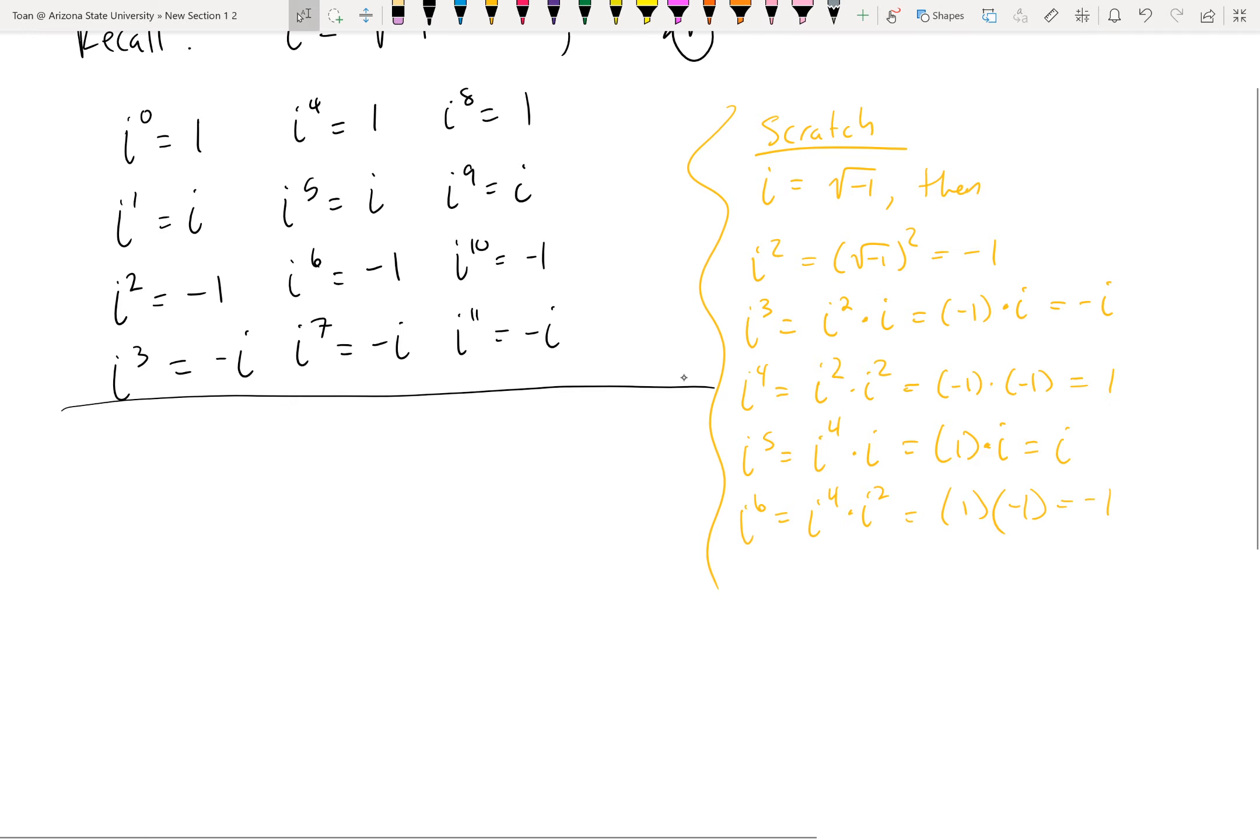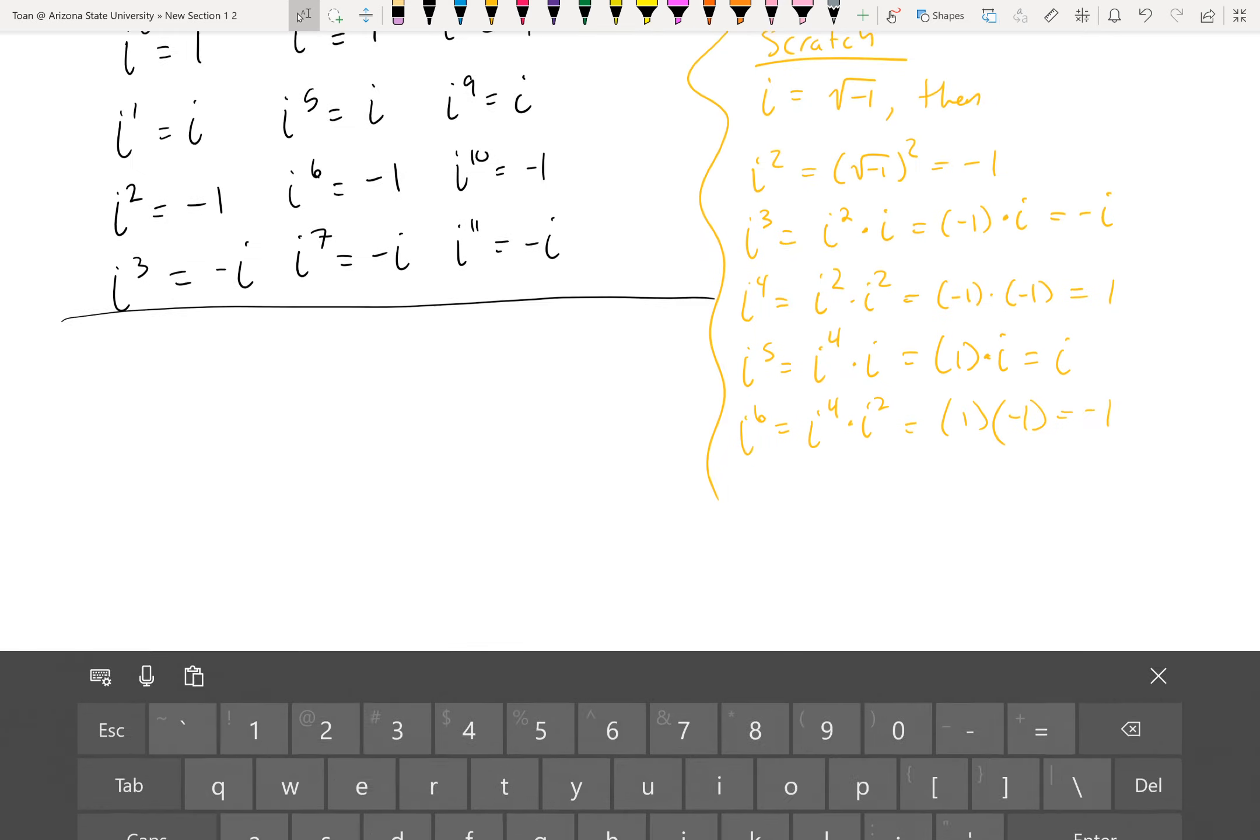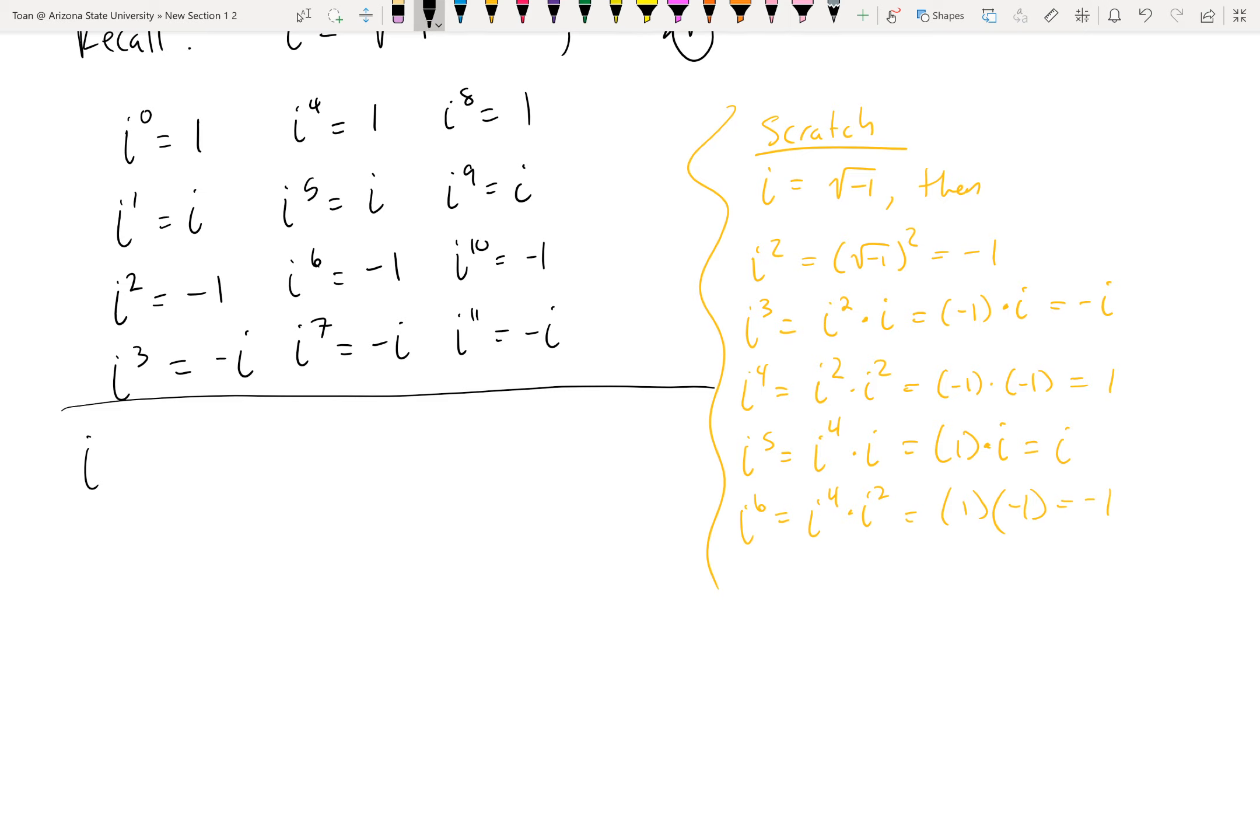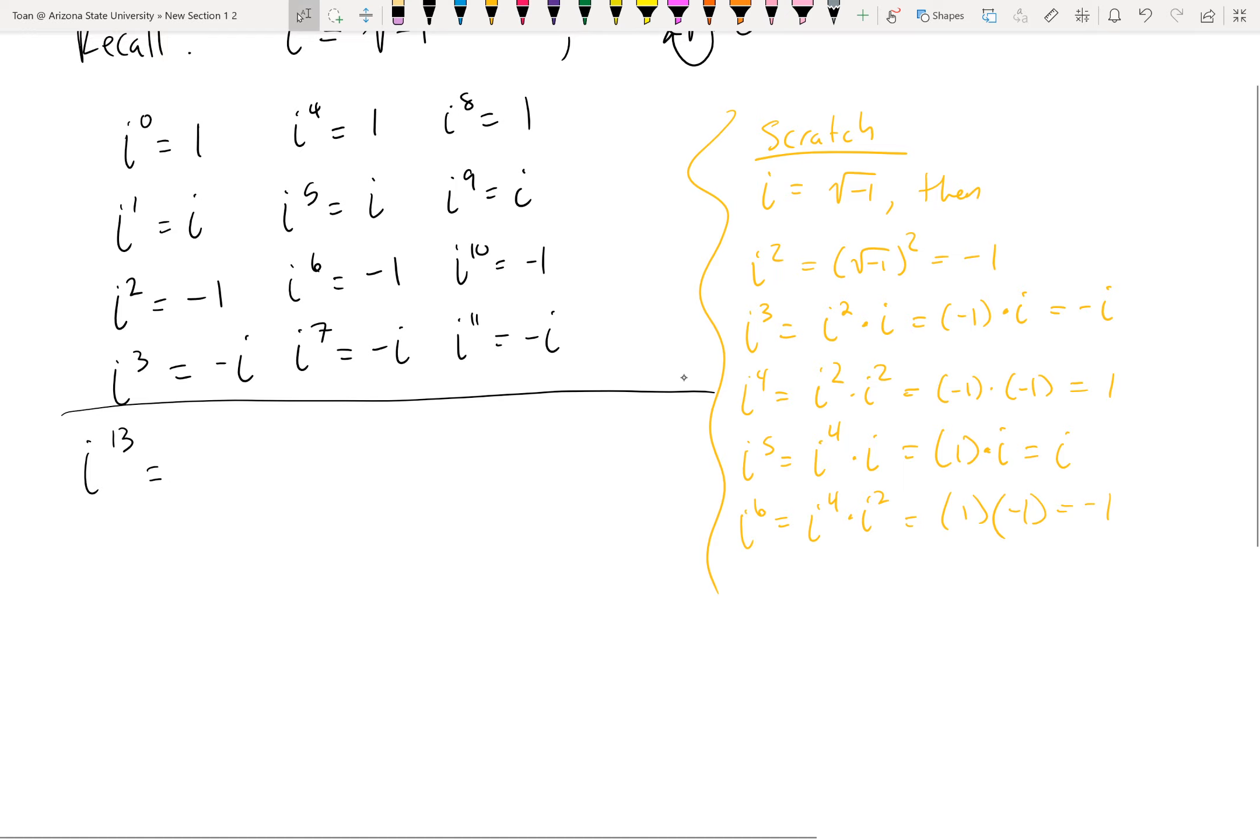Now, we can use this to our advantage if I wanted to simplify an exponent of I. Say, for example, what's I to the thirteenth power? Well, we've already gone up to 11, so let's just continue going. I to the twelfth, I to the thirteenth. That should be a simple I. So I would say I to the thirteenth is just a simple I.